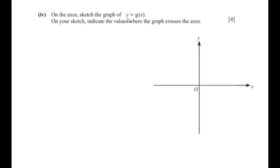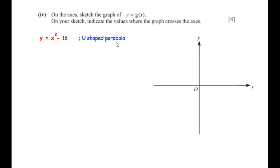On the axis, sketch the graph of y equals g(x) and indicate the values where the graph crosses the axes. Since g(x) equals x squared minus 16, the equation is y equals x squared minus 16. This is going to be a U-shaped parabola because the coefficient of x squared is positive.